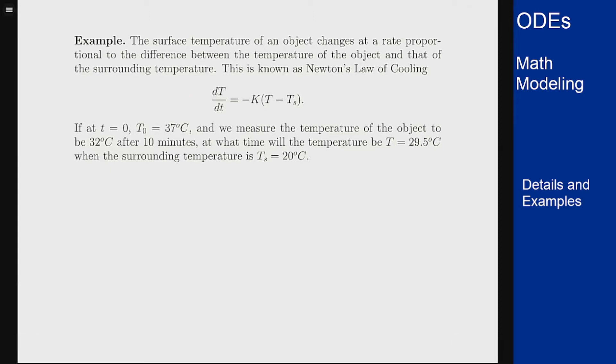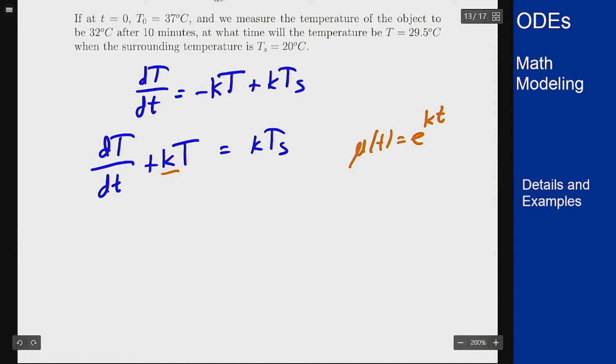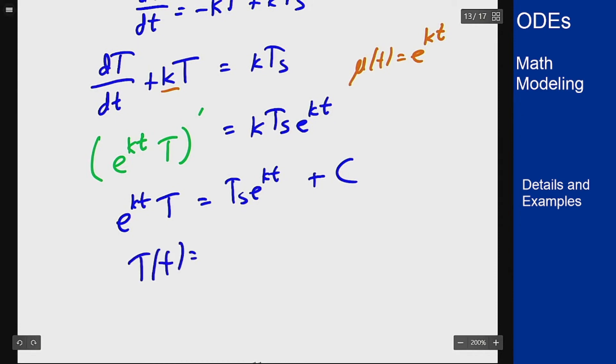This is a first order linear equation. I can rewrite this as dT/dt = -kT + kT_s. My integrating factor is μ(t) = e^(kt). The left hand side becomes e^(kt)T' equals kT_s e^(kt). Integrating both sides, my function is going to be T = T_s + ce^(-kt).